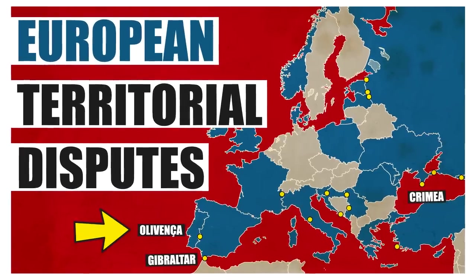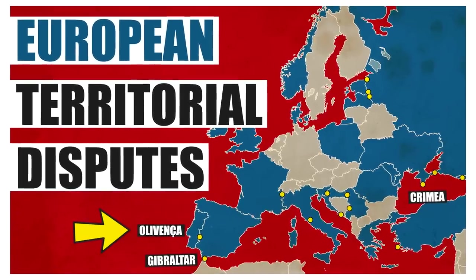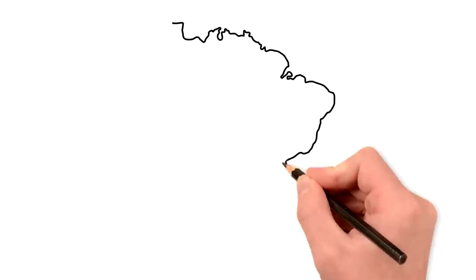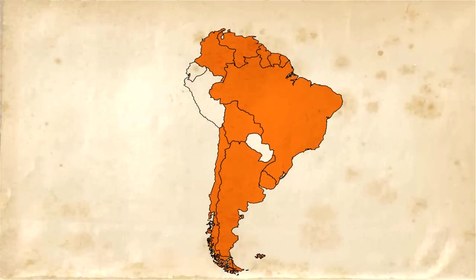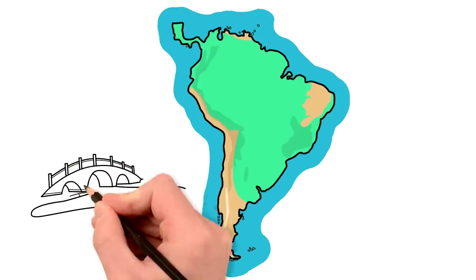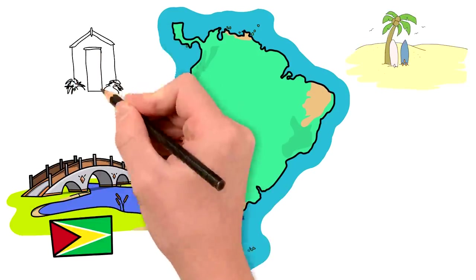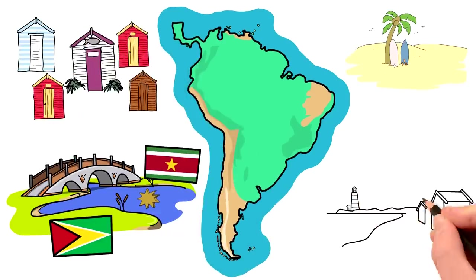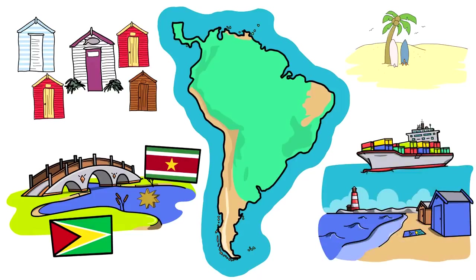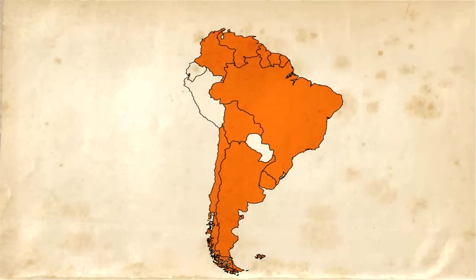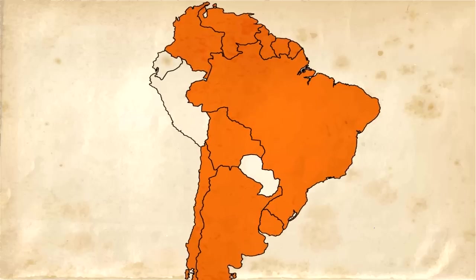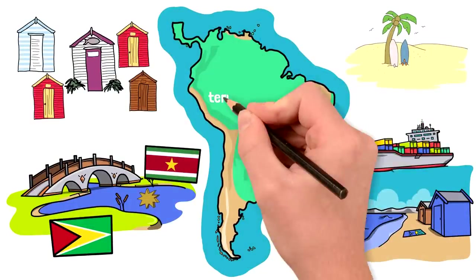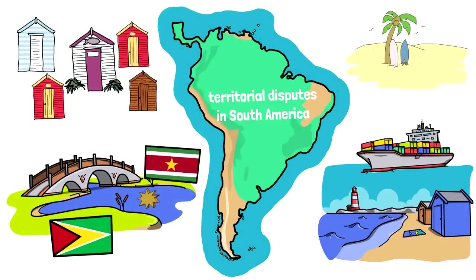A few videos ago, I talked to you about territorial disputes in Europe. Since you guys seem to like it, here's a version of that for South America. Pretty much all countries in South America have at least one territorial dispute with a neighboring state — sometimes over a river, an island, a small village, or something incredibly serious like sea access for an otherwise landlocked nation. In this video, I'm going to show you a few specific territorial disputes in South America.